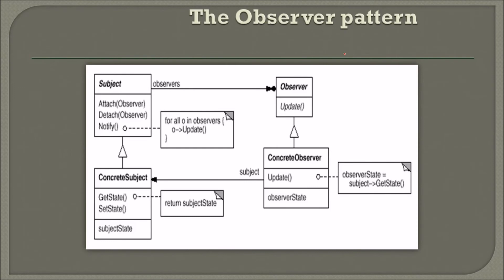This is an example of an observer pattern. We have a Subject and an Observer, a Concrete Subject and a Concrete Observer — you can very well find out where inheritance and where polymorphism is going on in this design pattern diagram.